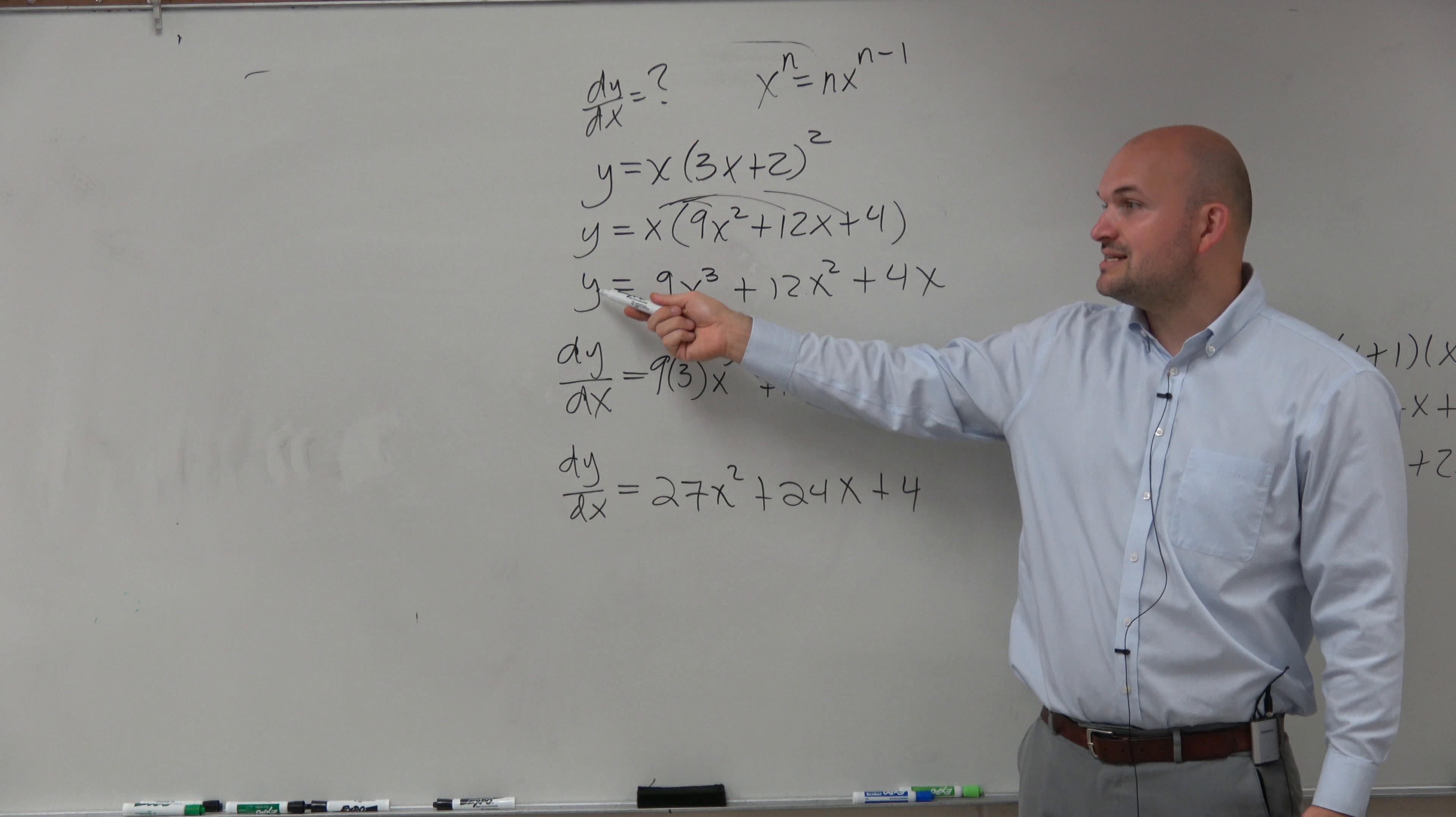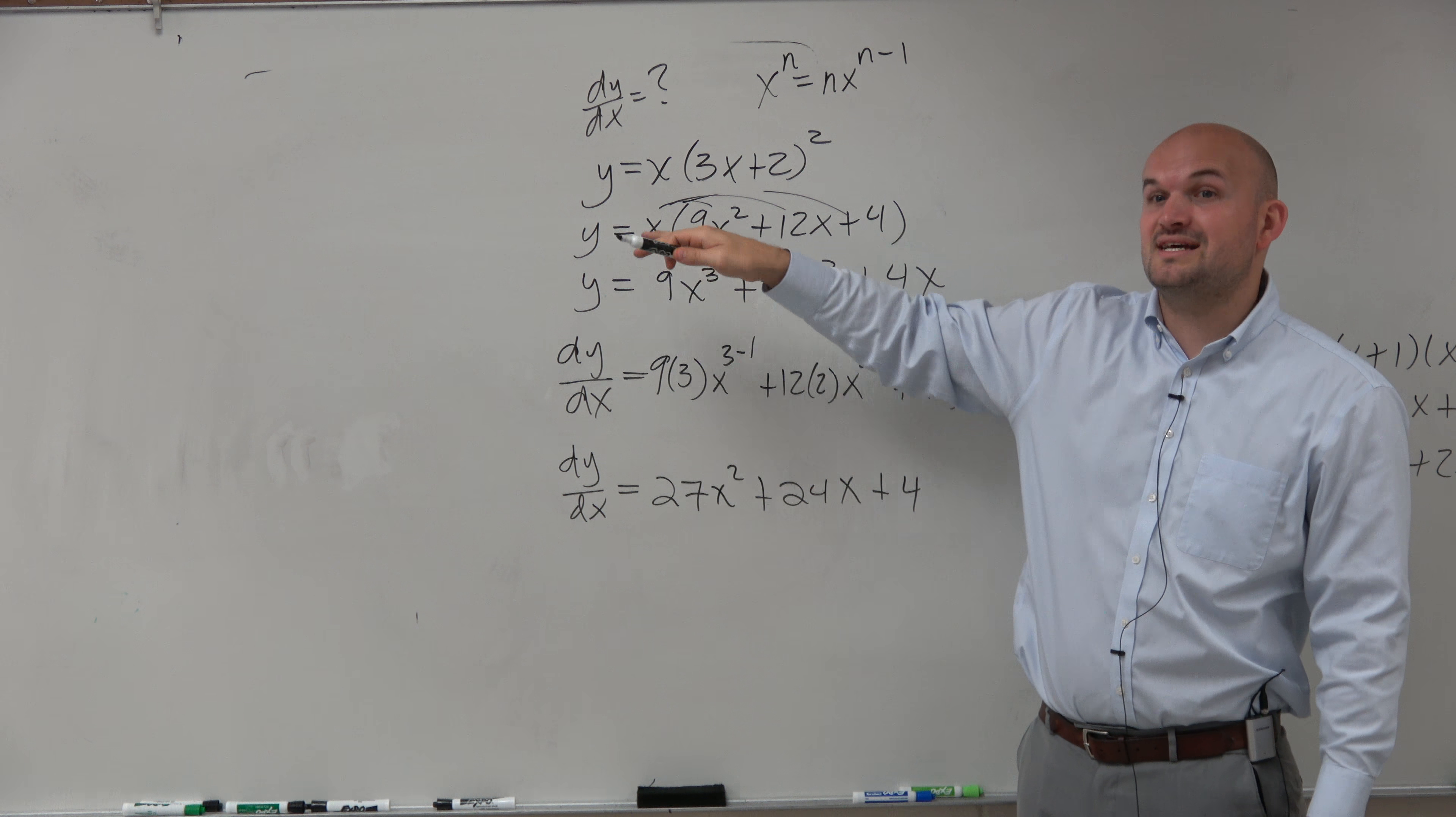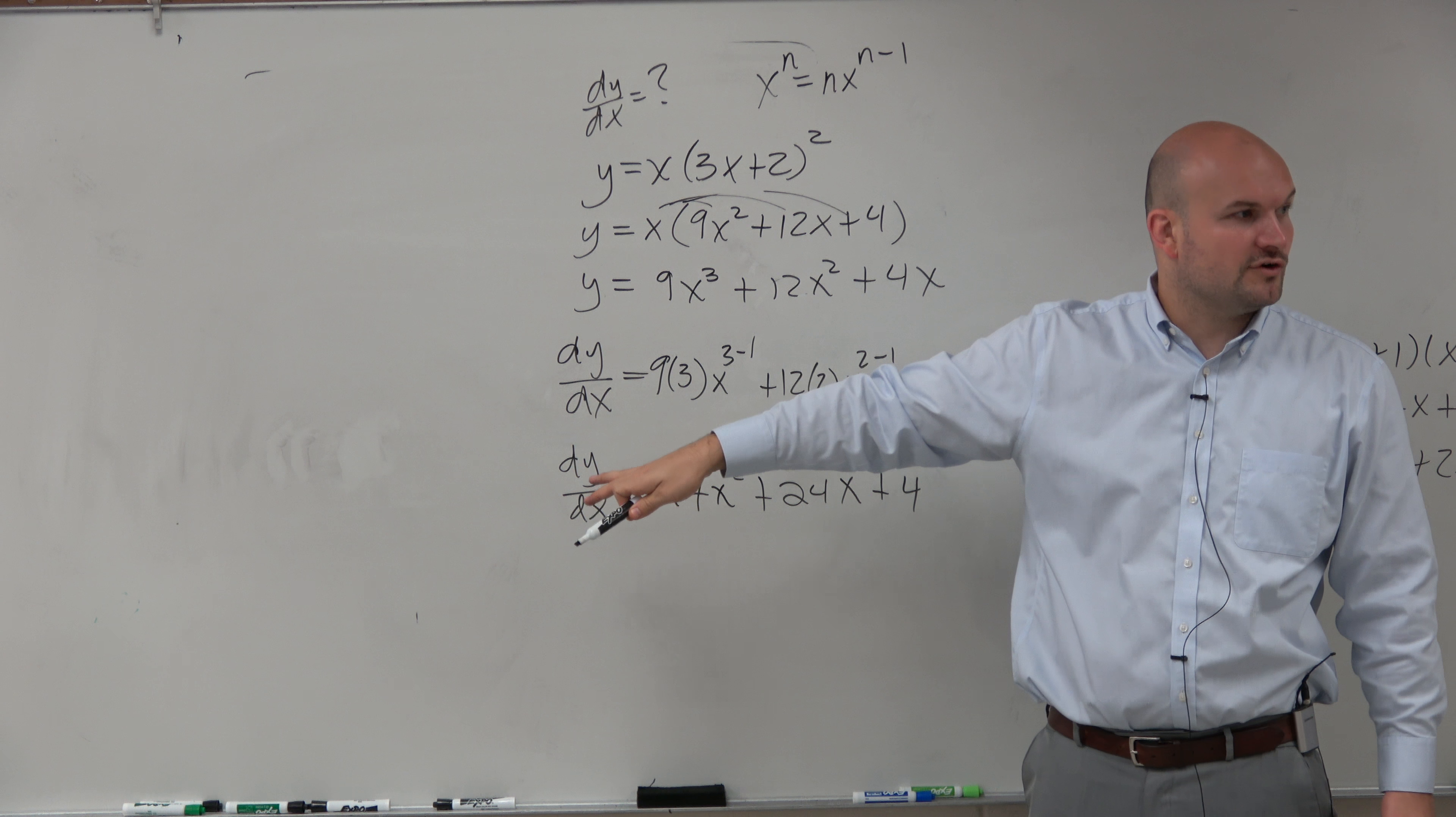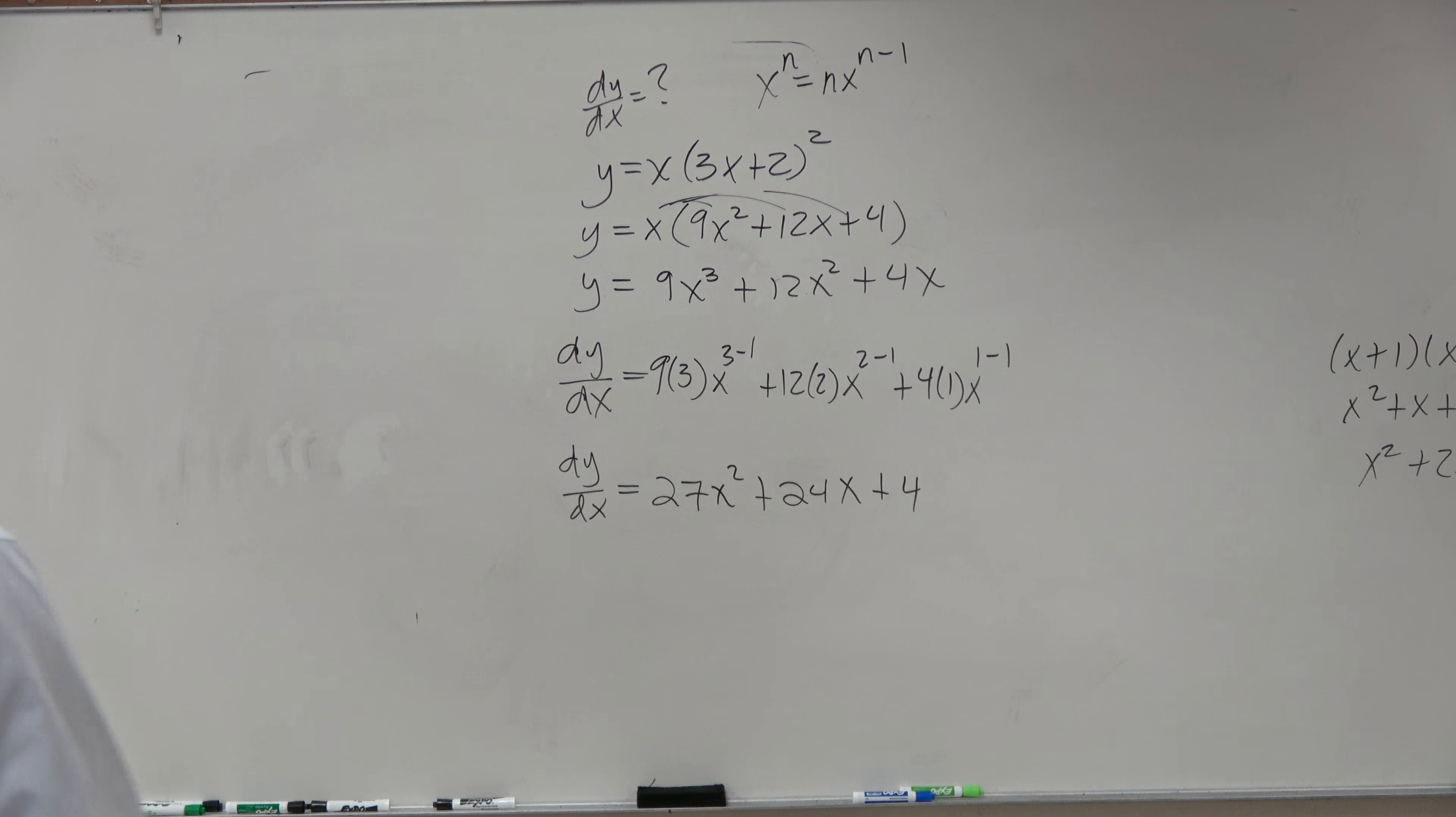Notice guys, how I change from y to dy/dx. I didn't write dy/dx equals this. I didn't take the derivative. All I'm doing is simplifying, so I'm still setting it equal to y. Does that make sense? Once I start doing the power rule, then I can convert it to dy/dx. Okay? Does anybody have any questions?